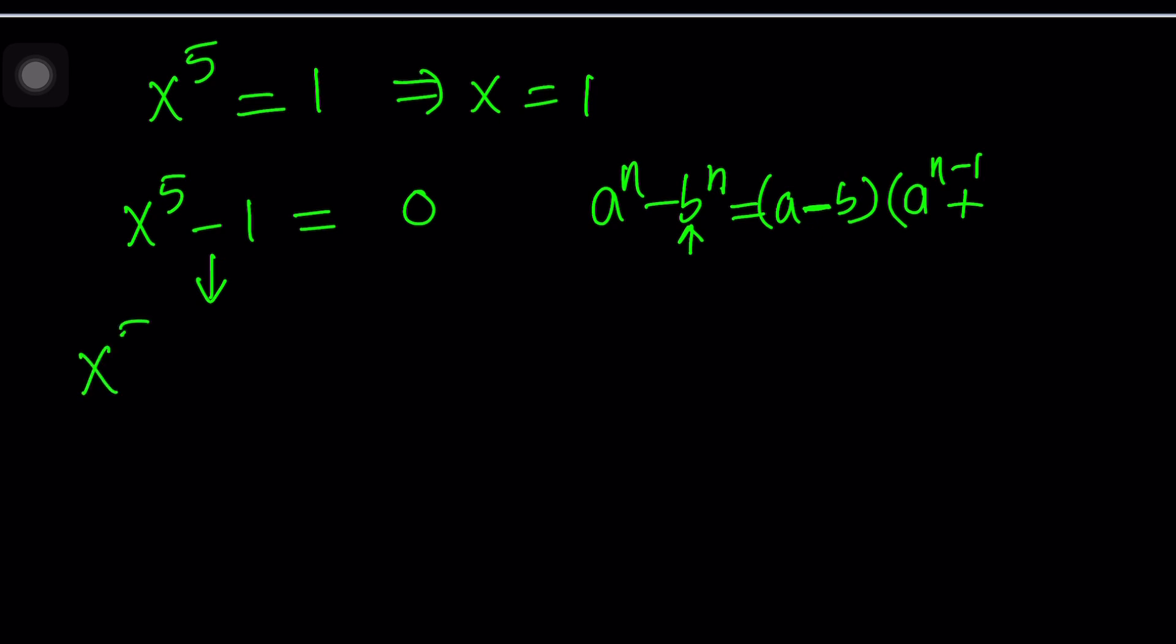But where does that come from? Let's talk about it. I'm going to subtract x to the fourth, and then I'm going to add x to the fourth, and then I'm going to subtract x to the third, and then I'll add x to the third, and then I will subtract x squared, and then add x squared, and then subtract x, and then add x. It should give me minus one at the end. And this should be balanced, because these terms all cancel out. And we end up with x to the fifth minus one at the end, but obviously you don't want them canceled out, because we need them.